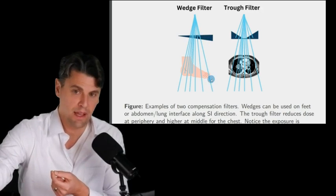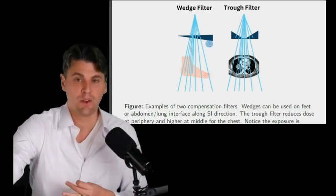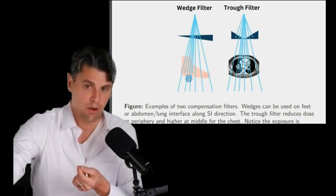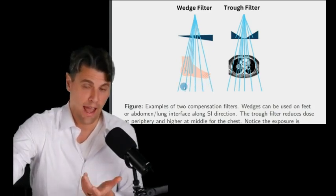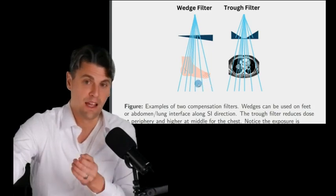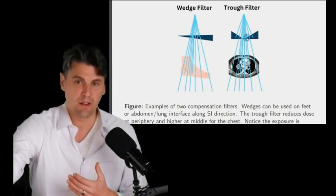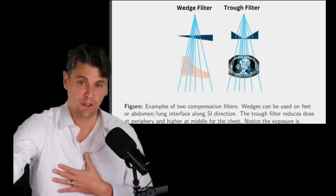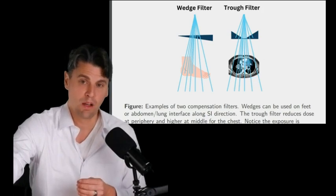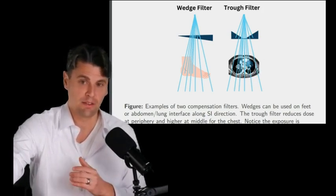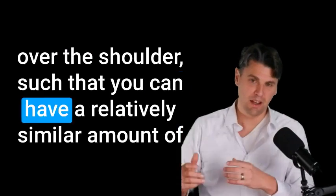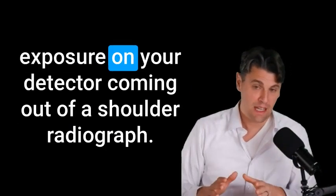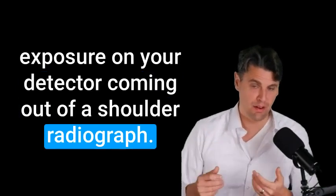If you're imaging a foot, you could use a wedge filter and have a thinner part of that wedge over the thicker part of the anatomy. The idea being that you'd like to have uniform exposure after passing through both this compensating filter and through your patient anatomy. You can use something that's called a trough filter if you're going over the chest because you actually have more attenuation around the heart and less attenuation around the lungs. There's a cool one called a boomerang filter that you can use over the shoulder such that you can have relatively similar amount of exposure on your detector coming out of a shoulder radiograph. That's your whirlwind tour of all the components of an x-ray system.